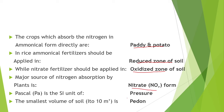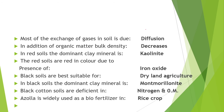Next point is, the major source of nitrogen absorption by plants is nitrate form. Most plants absorb nitrogen in nitrate form, but some plants absorb it in ammonium form. Next point is, Pascal is the SI unit of pressure. The smallest volume of soil is pedon. Most of the exchange of gases in soil is due to diffusion.